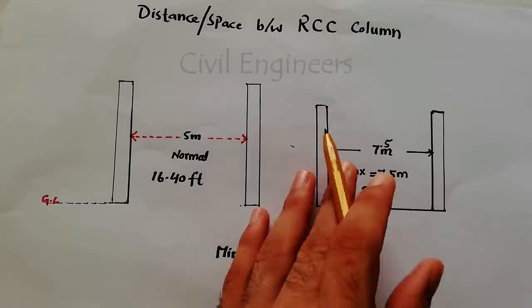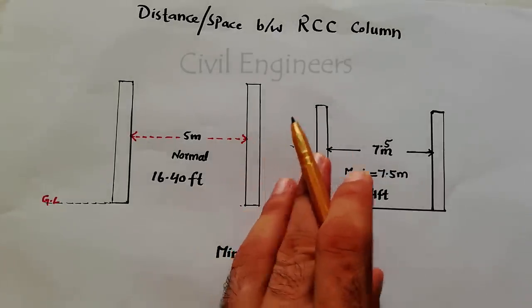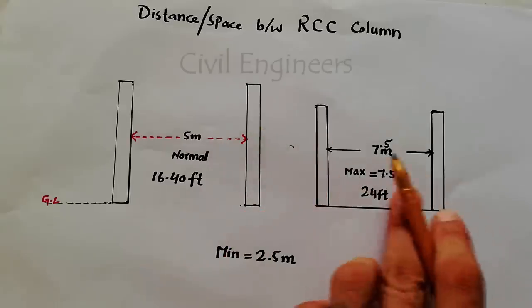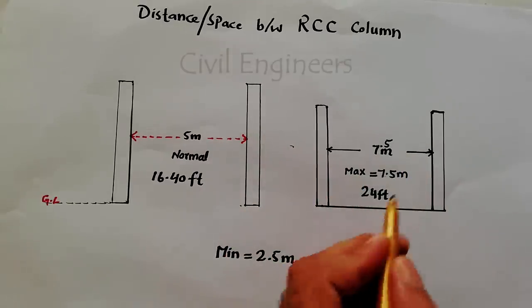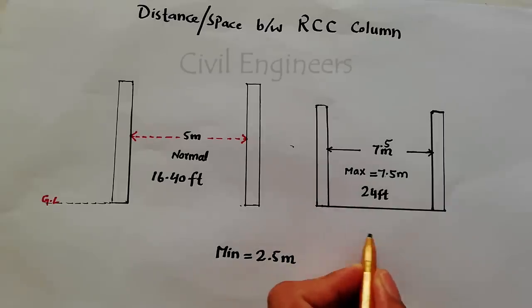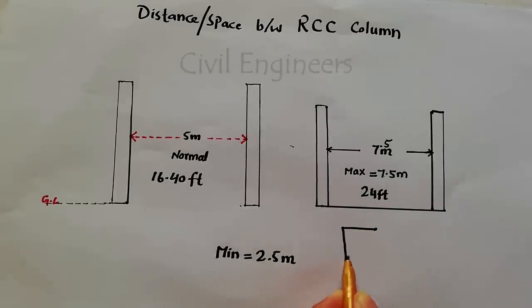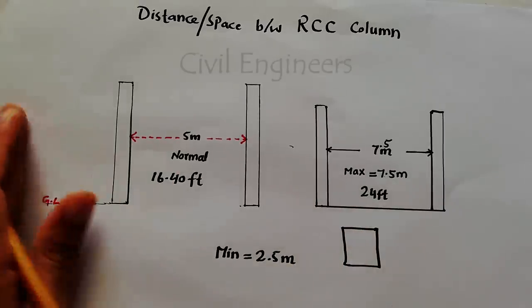But remember, if the load is more and you want to keep distance between two columns at 7.5 meter, then you will increase the depth of the column. So this is column cross section, we will increase depth of the column.